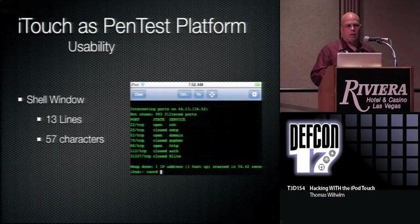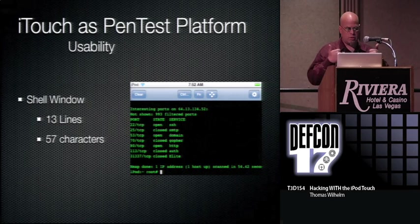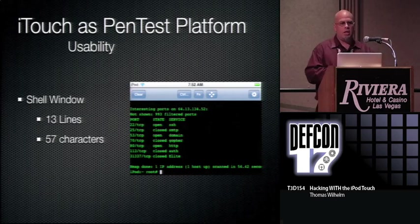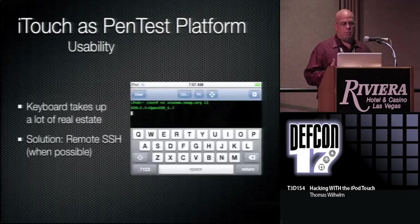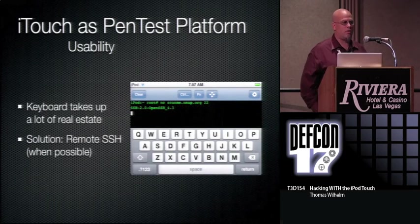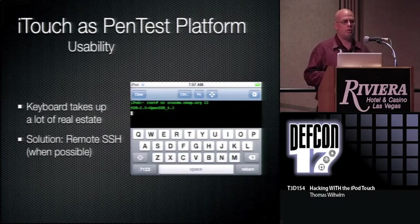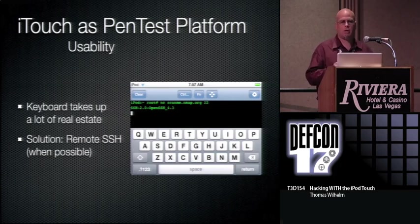As a usability issue, the iPod is really small and I've got big fingers, so my thumbs go all over the place. The screen is only 13 lines and 57 characters across. The keyboard takes up a lot of the real estate, and when NMAP starts spewing output, you just can't keep up. One observation: if you're going to do anything with the iPod Touch, it's better to do it remotely than directly on the device. From a social engineering perspective, people will just assume you're texting.